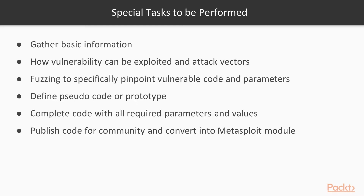In any case, you might need to perform some of these tasks: gather basic information such as the platform and architecture the vulnerability is supported on; get all possible details about how the vulnerability can be exploited and what the possible attack vectors are; use techniques such as fuzzing to specifically pinpoint the vulnerable code and parameters; define a pseudo code or prototype to test whether the exploit is working; write the complete code with all required parameters and values; and publish the code for the community and convert it into a Metasploit module.